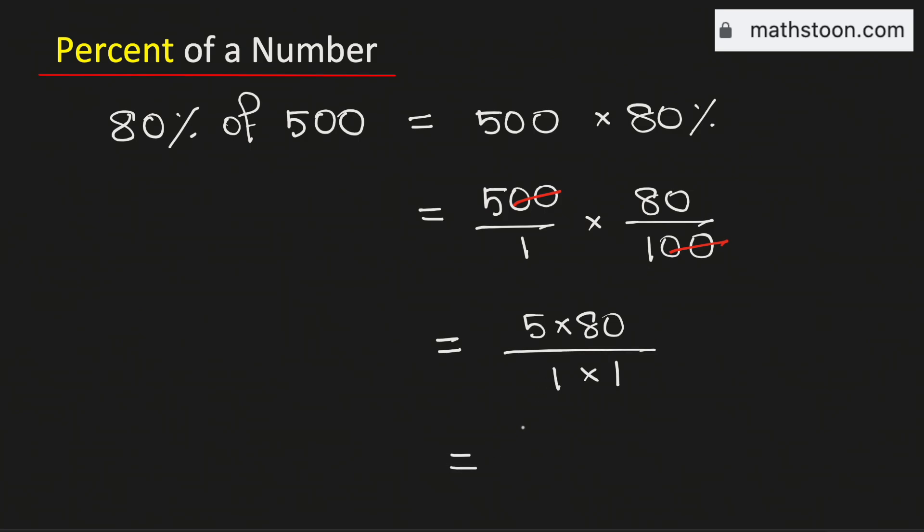This is equal to 400 divided by 1, and this is same as 400. Therefore, 80% of 500 is equal to 400. And this is our final answer.